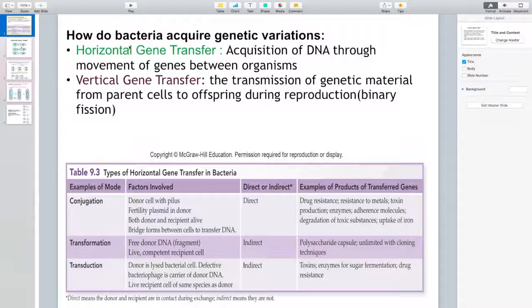And the second one is vertical gene transfer, which is true for almost all living organisms. And that means the transmission of genetic material from parent cells to offspring during reproduction. In case of bacteria, the method of reproduction that brings vertical gene transfer is called binary fission when one parent cell splits into two after replicating its DNA.